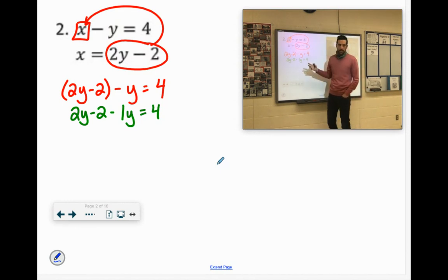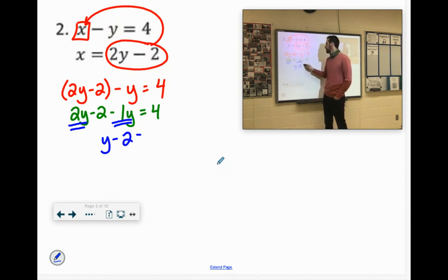If we are combining our like terms now, I have 2y minus 1y. 2y minus 1y is just 1y, which is y. Y minus 2 equals 4.